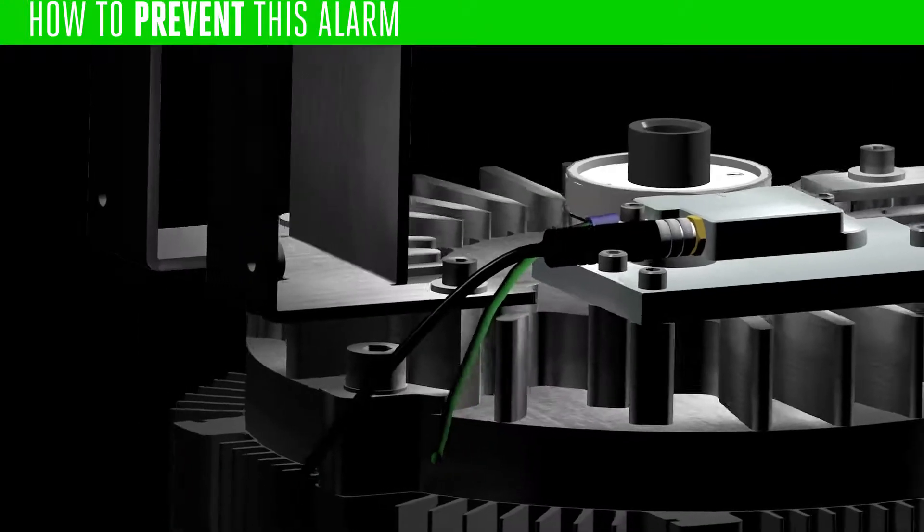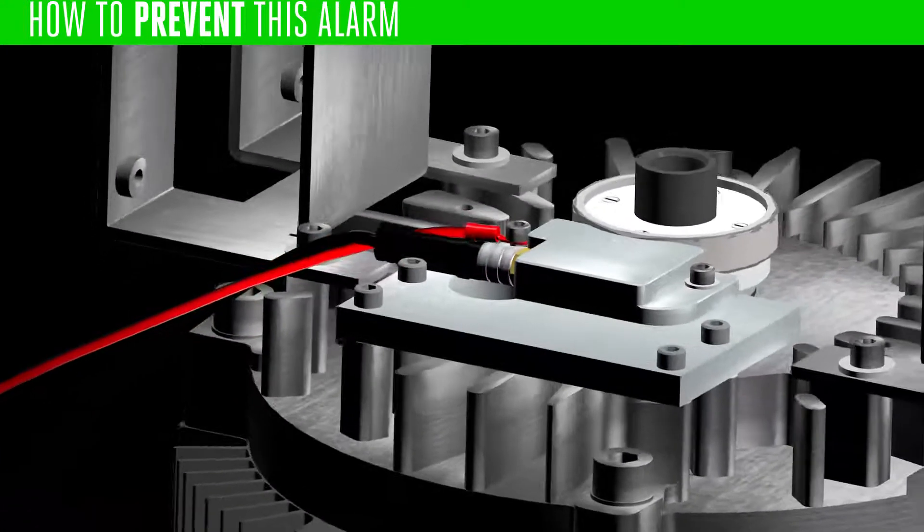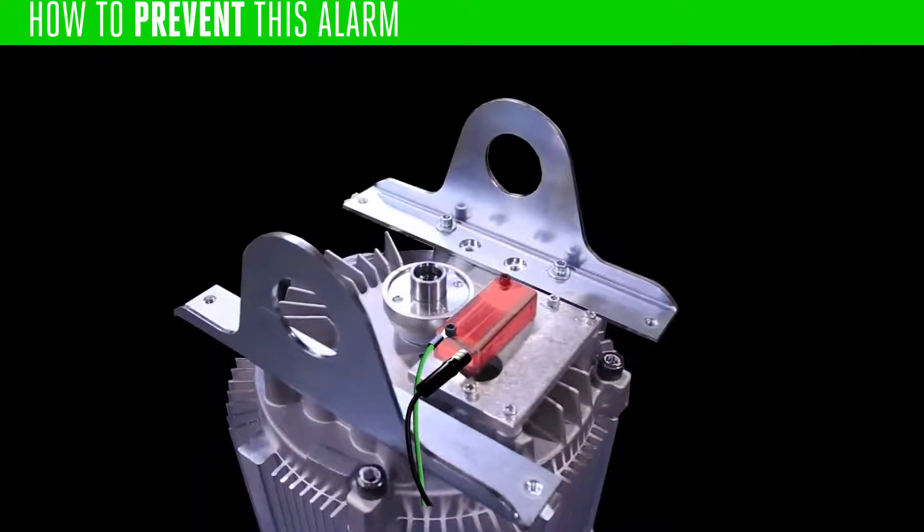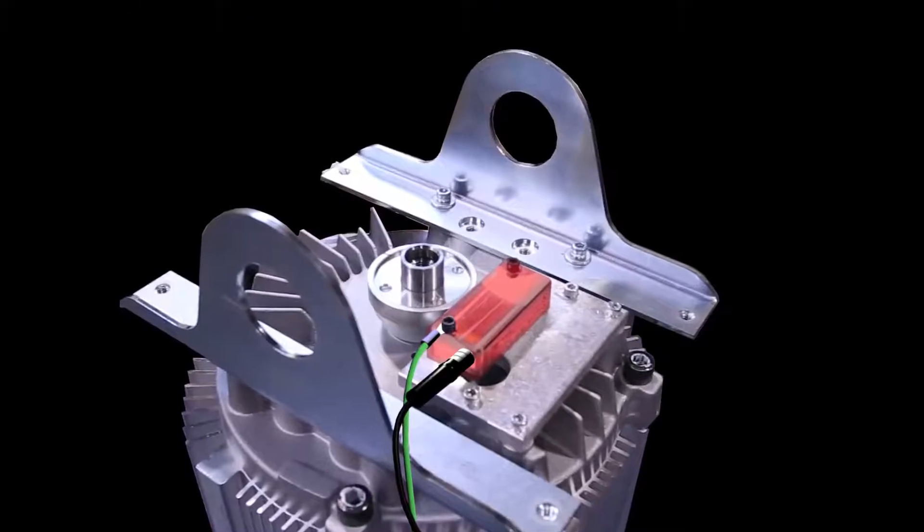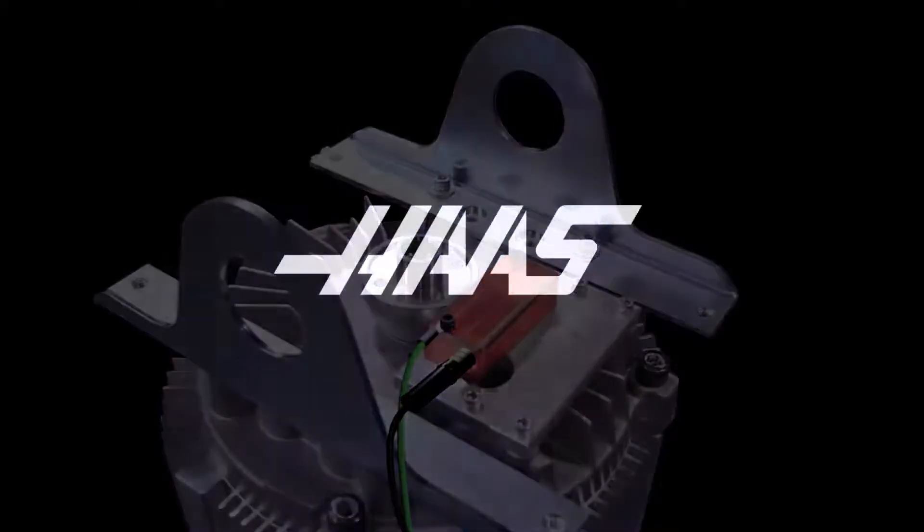If the encoder serial and grounding cables are firmly attached to both ends and the reed head appears undamaged and the alarm persists, contact your local Haas factory outlet for assistance.